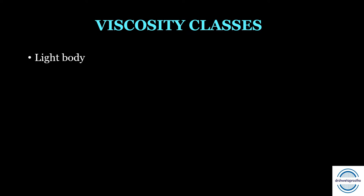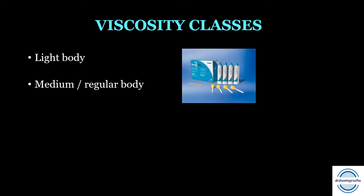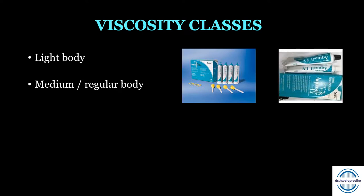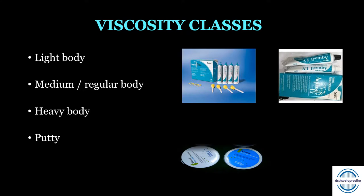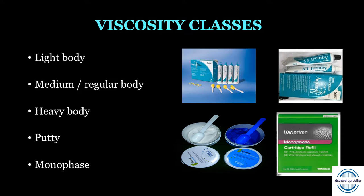The five consistencies are: first, light body or syringe consistency, available in syringes or cartridges; second, medium or regular body, used with special trays; third, heavy body or tray consistency; fourth, very heavy body or putty consistency — heavy body and putty can be used in perforated stock trays with a light body wash impression over them; fifth, monophase, associated with shear thinning (pseudoplasticity), which can be used both in syringes and as a tray material.